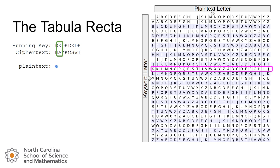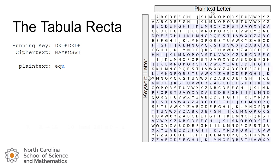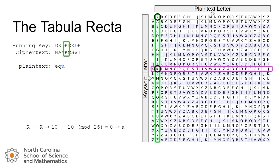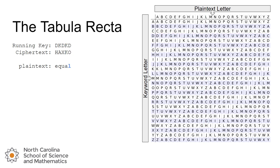Moving through the remaining letters: K and A — we highlight the row, find the ciphertext intersection, follow the column back up, and get Q. Mathematically, that's A and K converting to 0 and 10; 0 minus 10 gives negative 10; negative 10 mod 26 is 16, which is Q. Continuing: row D with ciphertext X gives us U; the next pairing gives A; the next gives L. And we get the word — well, looks like I cut it short there because I was getting tired of all those letters.